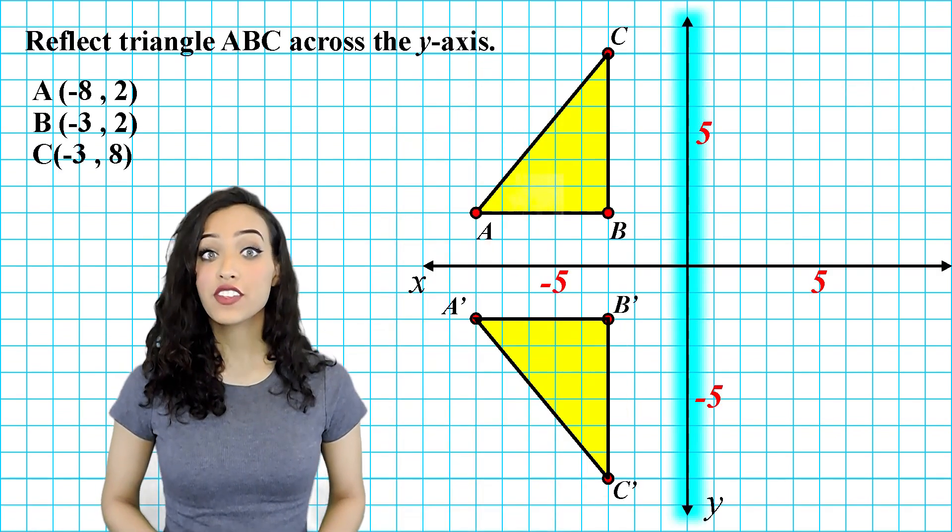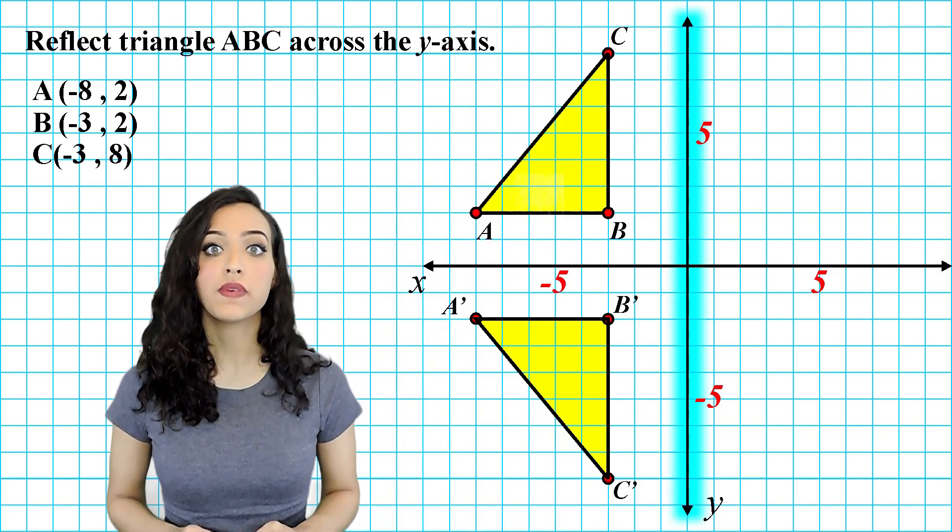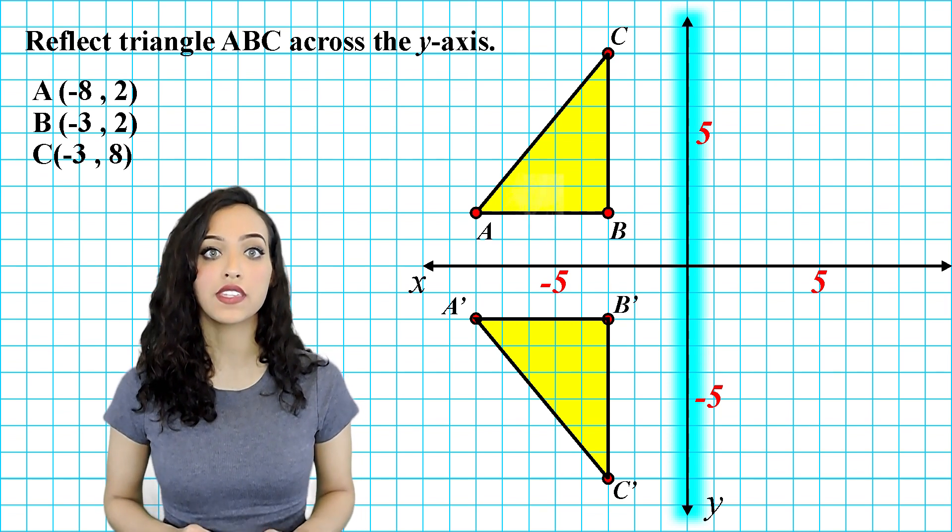Alright, let's go ahead and reflect triangle ABC across the y axis. A reflection across the y axis requires making all y values the same and the x values opposite.